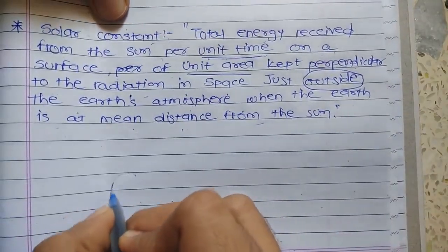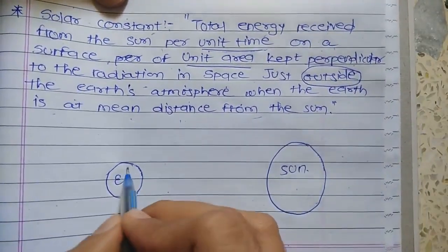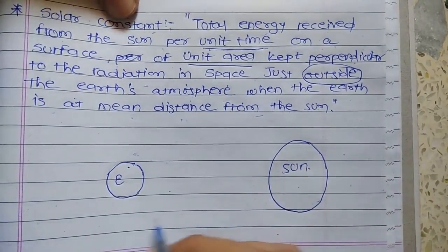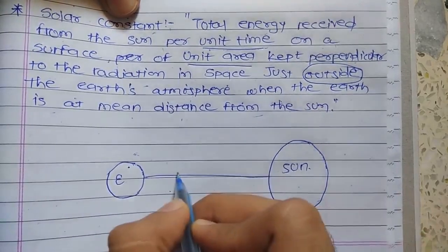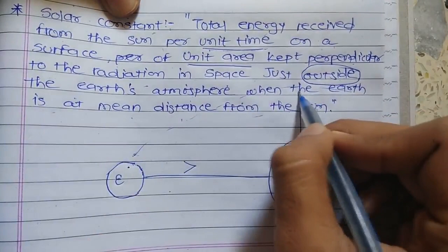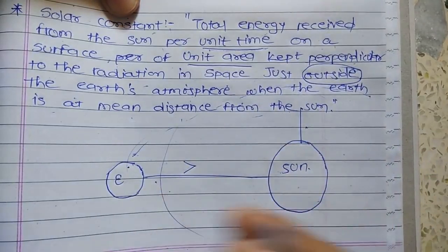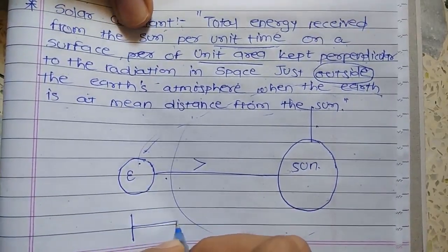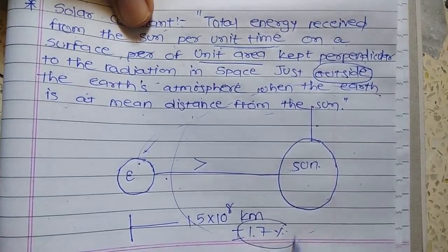Basically, we are considering the Earth and the Sun. The Earth revolves around the sun in an elliptical manner, so there are some differences in distance. The mean distance is 1.5 × 10⁸ km, plus or minus 1.7%. We keep this tolerance because the orbit is elliptical, so the distance can be higher or lower.